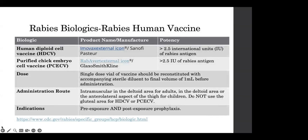Human rabies vaccine is used in persons that meet recommendations for pre-exposure and post-exposure prophylaxis. Be sure to follow manufacturer's recommendations on reconstitution. The route of administration is in the intramuscular deltoid area for adults or the anterolateral aspect of the thigh for children. Do not use the gluteal area for the rabies vaccine.